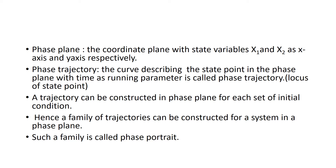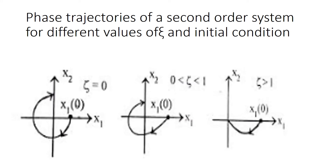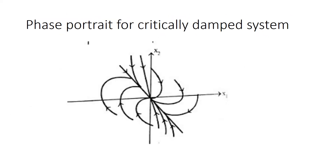For different initial conditions, each draws a phase trajectory, and many phase trajectories together form a phase portrait. This is the phase trajectory of a second order system for different values of ζ and initial condition x1(0). For ζ = 0 we have the first figure, for 0 < ζ < 1 the second figure, and for ζ > 1 the third. The initial condition is the same and the ζ values differ. This is the phase portrait — the family of phase trajectories for different initial conditions or parameters.